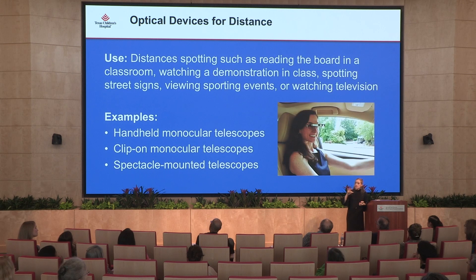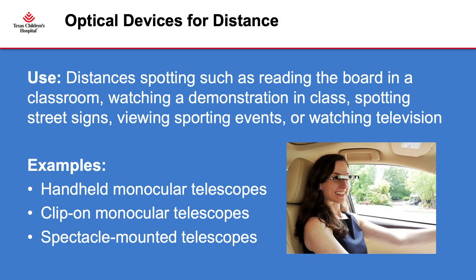When we get into distance magnification it's a little more complicated. A spectacle-mounted telescope called a bioptic is really cool — you dip your chin down and look through a little hole and it magnifies whatever you're looking at. If a person can achieve a visual acuity of 20/40 with the telescope, they can actually obtain a restricted driver's license. Driving is obviously a huge freedom, and most of these families have never even dreamt that their child could drive — so this is a really exciting possibility.